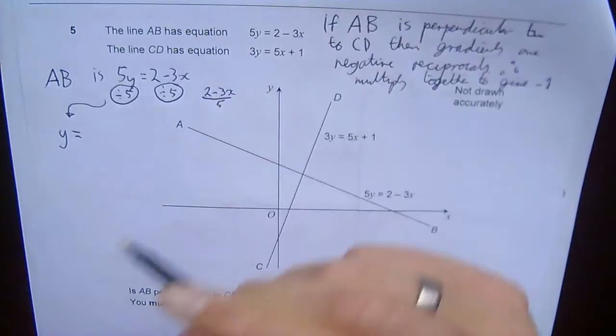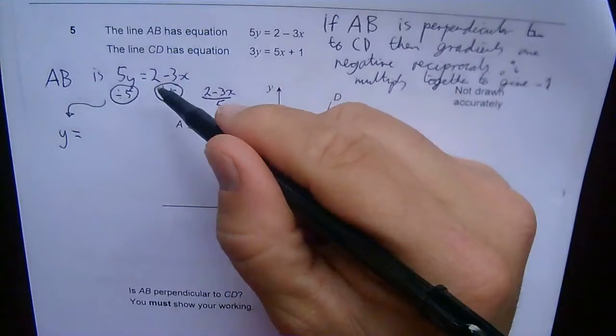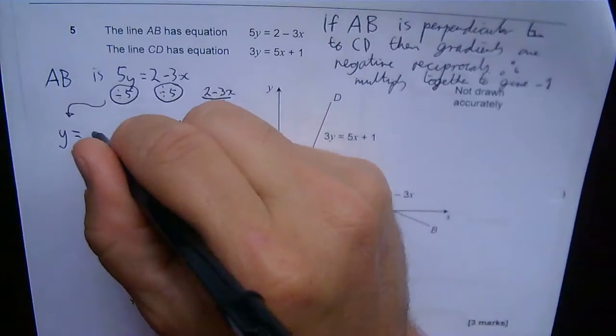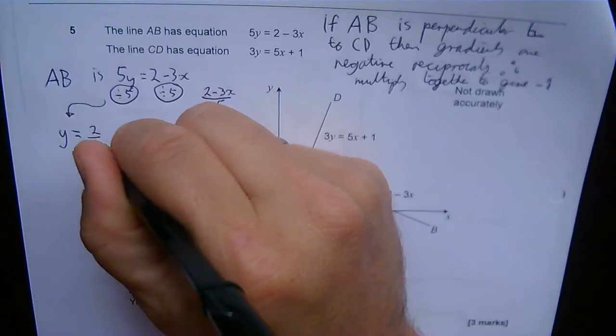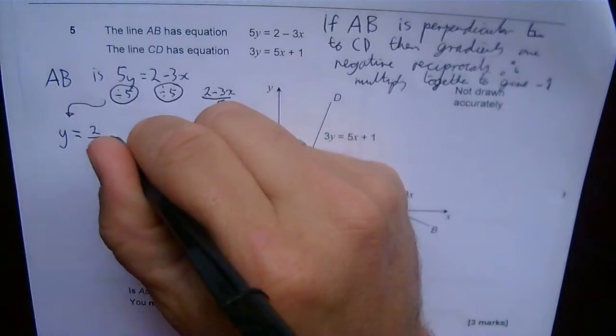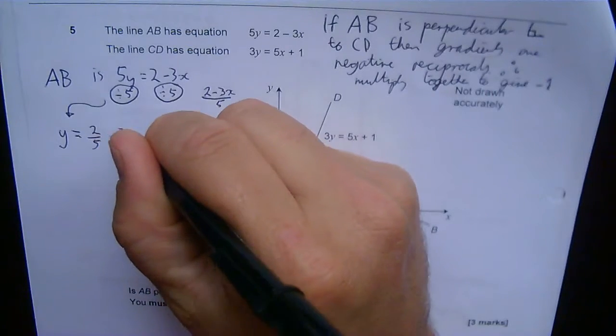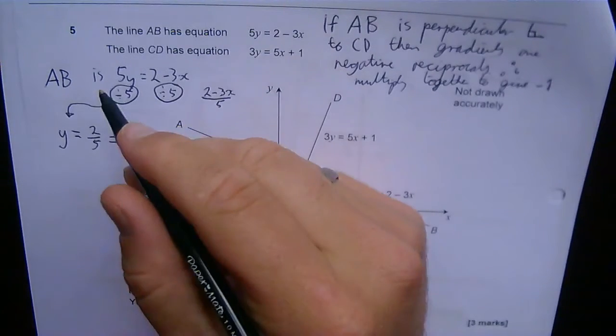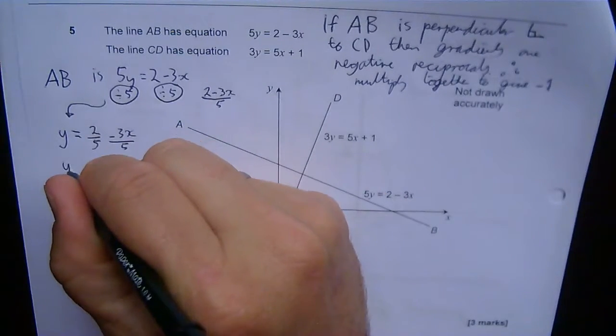If I divide 2 - 3x by 5, it's possible to split out each term, so each one is divided by 5. I have 2/5 minus 3x/5.